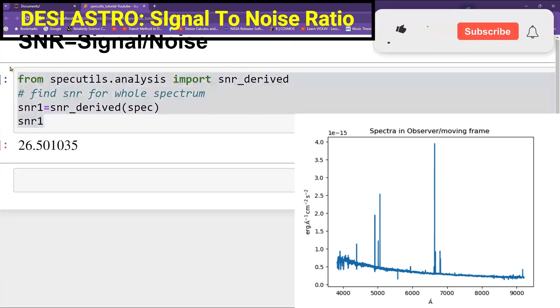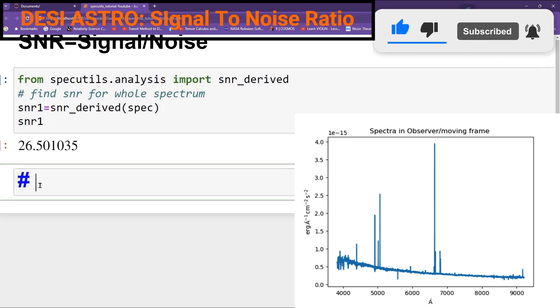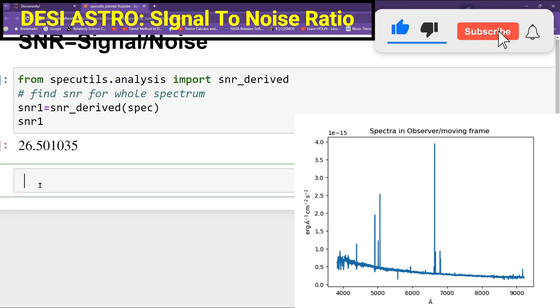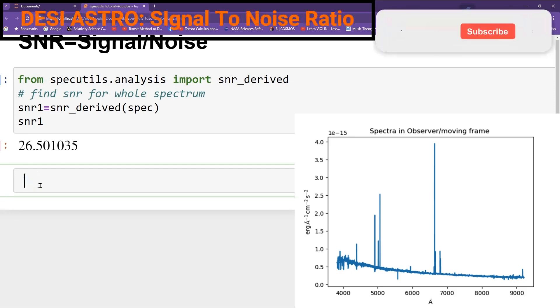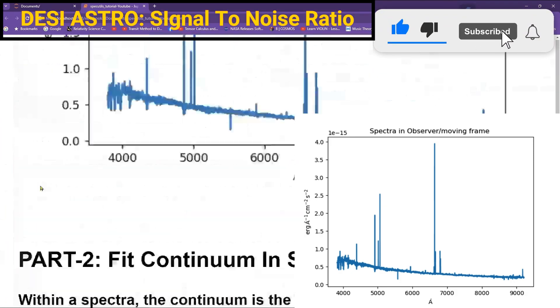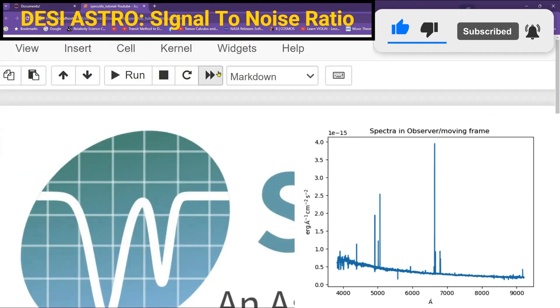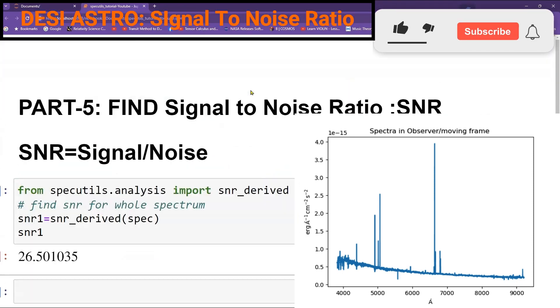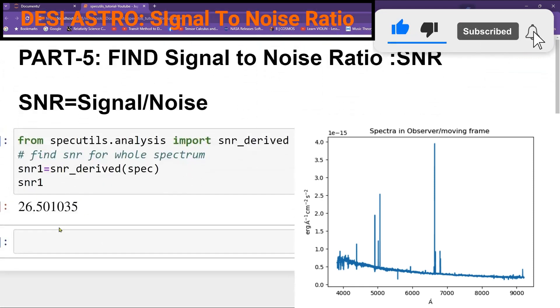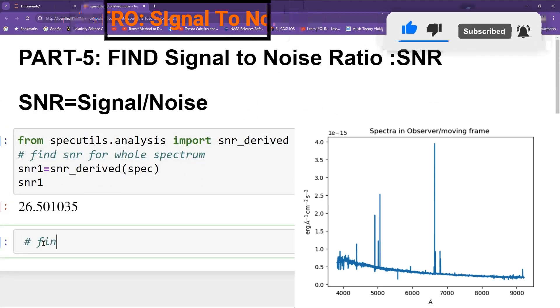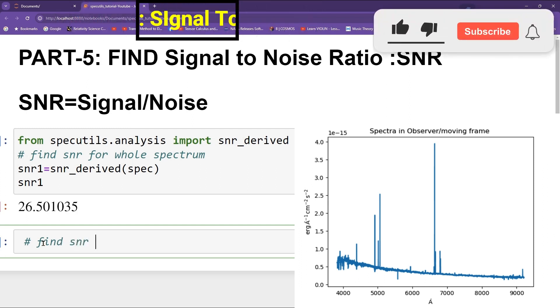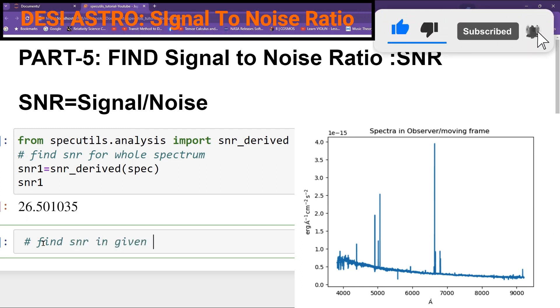This is like a full Spectra. Now suppose you want to find, so here we will find SNR in a given region. So for that, you are called as SNR2 and you can give